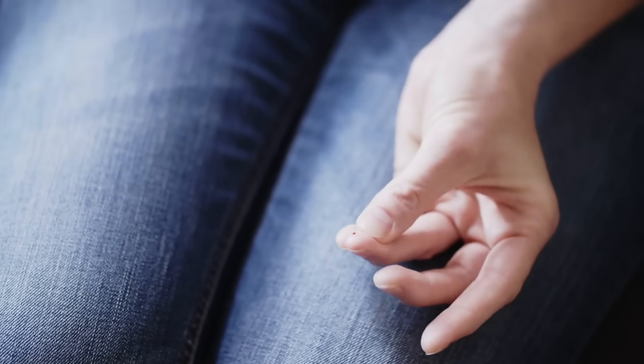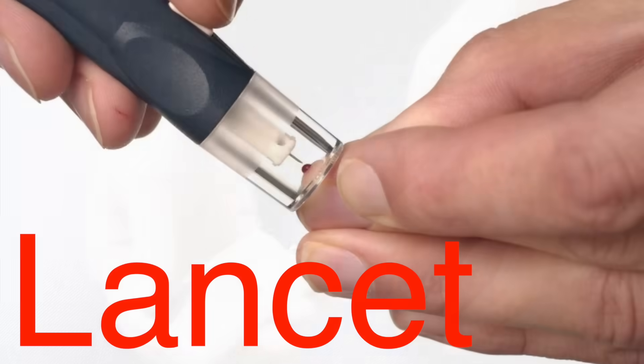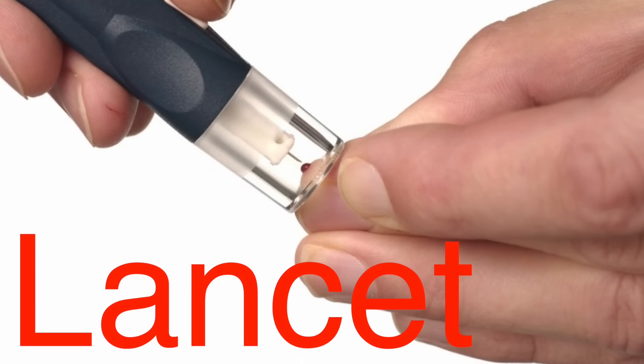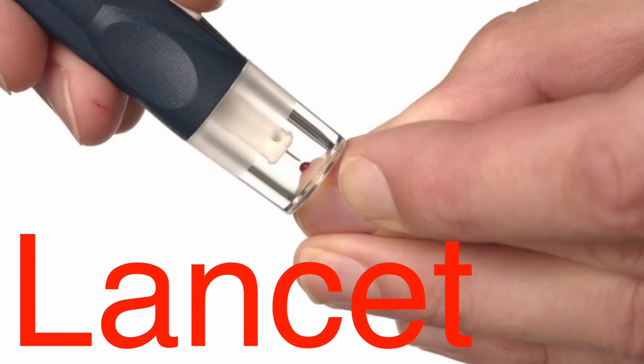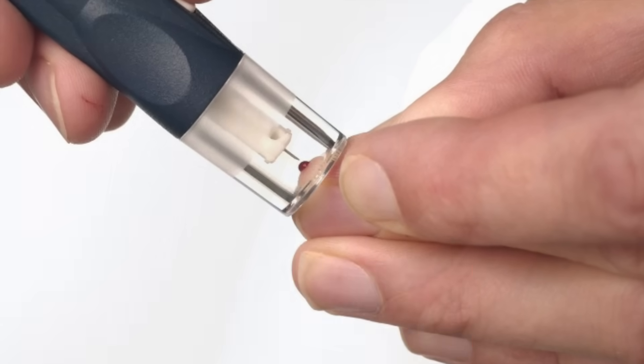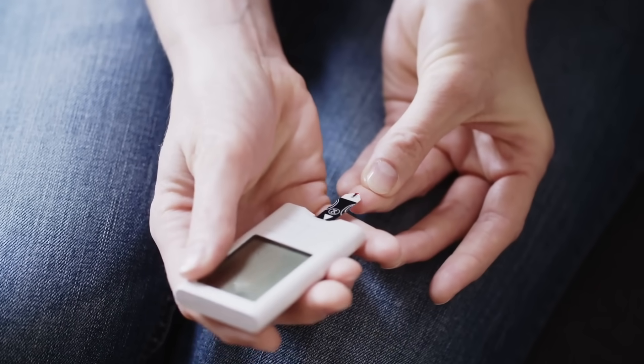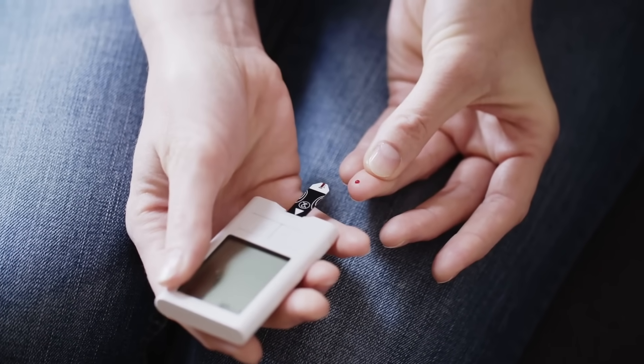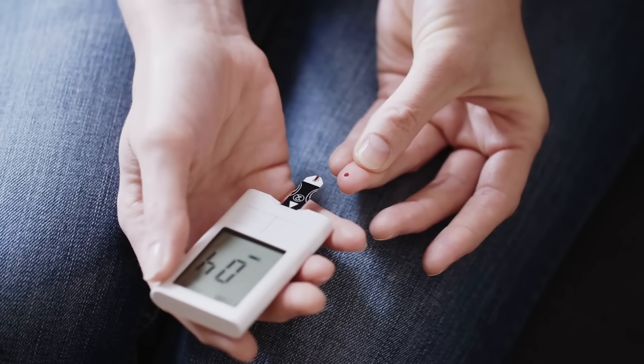Every test begins with a small prick of the finger. The lancet, a spring-loaded needle, makes this part quick and, thankfully, nearly painless. Once a drop of blood is ready, it's placed on a test strip, which is inserted into the meter. That's where the real magic begins.